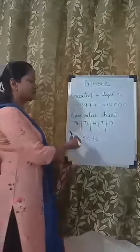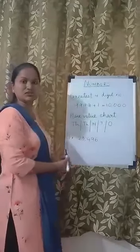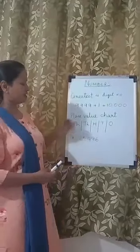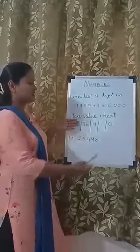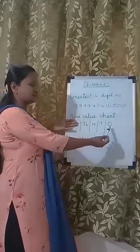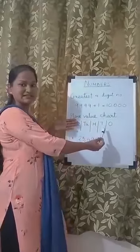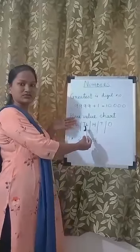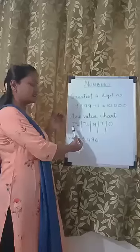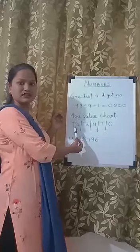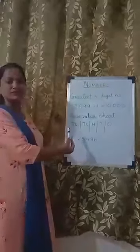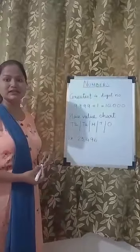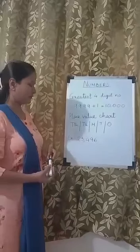Let us come to the place value chart. The place value chart, as we have learned, is 1's, 10's, 100's, 1,000 and 10,000. 10,000 is a new place value which we are going to learn this year.